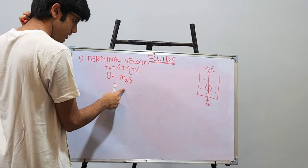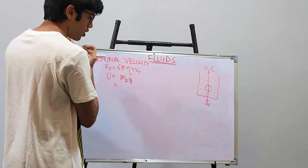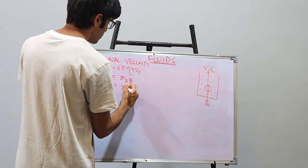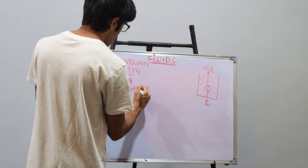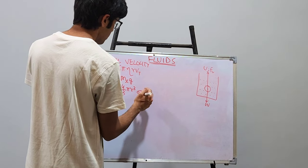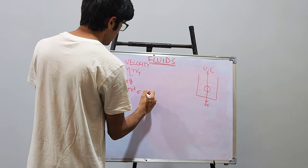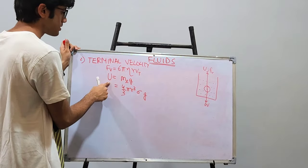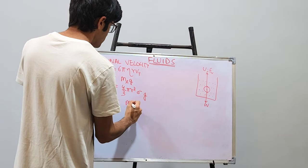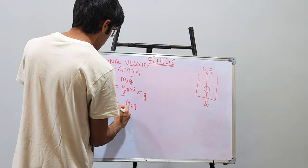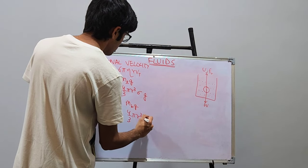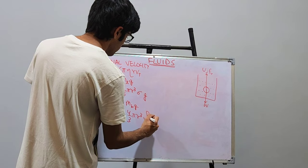We know that density equals mass upon volume, so mass equals volume into density. The volume of the liquid displaced is (4/3)π r³ into density σ (density of the liquid). So upthrust is (4/3)π r³ σ g. The weight of the body is mass of the body into g, where mass is volume into density: (4/3)π r³ ρ g, where ρ is the density of the ball.